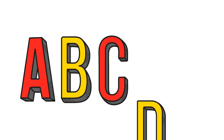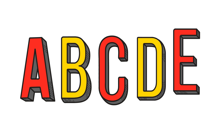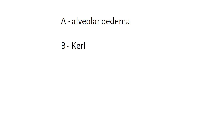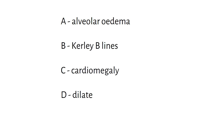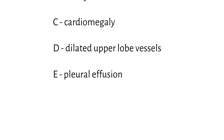For study purposes I use the mnemonic ABCDE to remember these findings. A for alveolar edema, B for curly B lines, C for cardiomegaly, D for upper lobe diversion, and E for effusions.